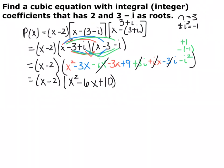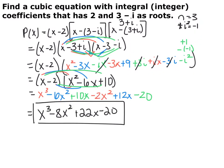It simplifies down to x squared minus 6x plus 10. Now your last step is to foil this binomial by this trinomial to finish up with your cubic function. Go ahead and pause the video and finish foiling. Once everything is foiled out, the cubic function is x cubed minus 8x squared plus 22x minus 20. Whenever you're given known zeros and the degree of the function, set up the factors and foil everything out.